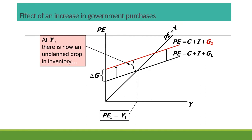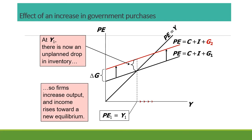Because of the increase in G, the economy cannot stay at Y1 anymore. At Y1 there is an unplanned drop in inventory — more is being spent in the economy. So inventories drop, and firms respond by increasing output, moving to a new equilibrium at Y2. This shows that an increase in government expenditure results in a higher level of output for the economy. From a Keynesian perspective, this assumes nothing else is changing — this is a ceteris paribus analysis.